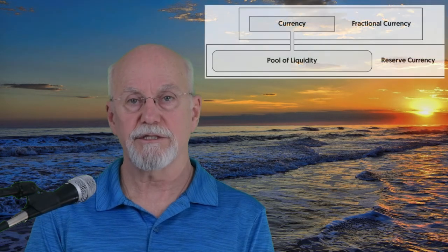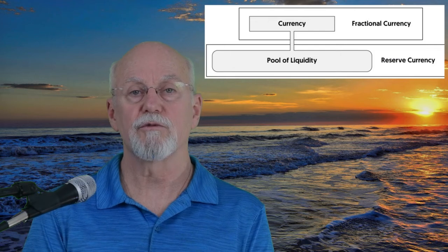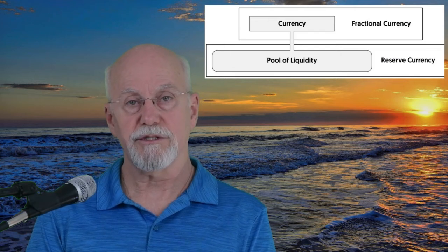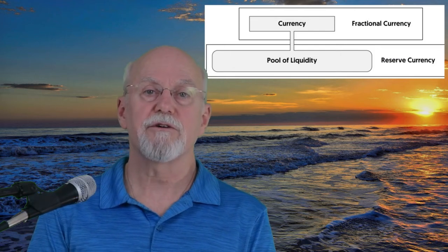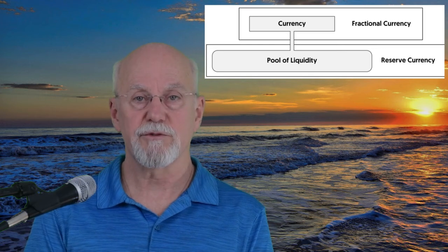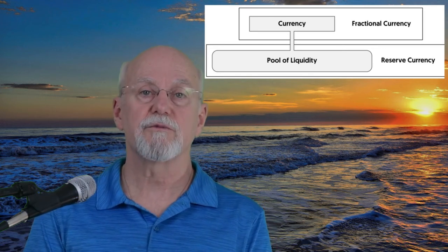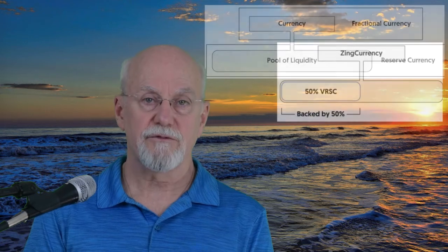In the Verus ecosystem, we say a currency is fractional when it has a liquidity pool attached. The currencies in the pool of liquidity are called reserve currencies. We showed how a fractional currency derives its value completely from its reserve currencies. In Verus' ecosystem, we can have fractional currencies that are less than 100% backed.